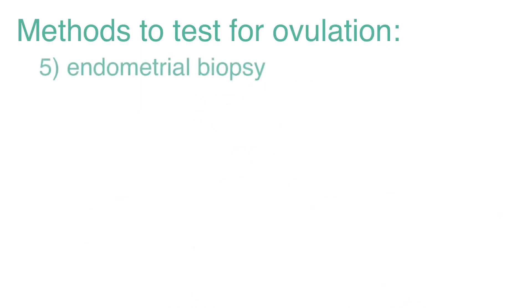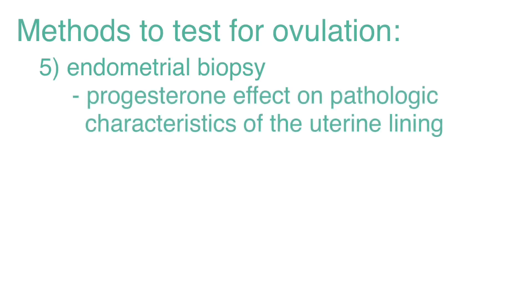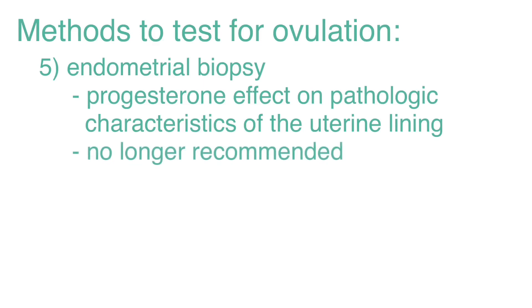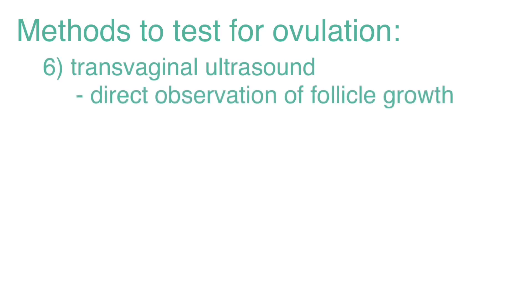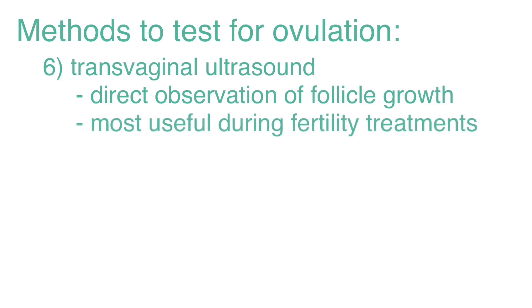The next test is the endometrial biopsy. This was previously done as a test for ovulation based on the progesterone effect on the pathology characteristics of the uterine lining. This test was proven invalid and is no longer recommended. The last test is a transvaginal ultrasound, which will provide more direct information on the growth of the follicle during the cycle and is most useful during fertility treatments.